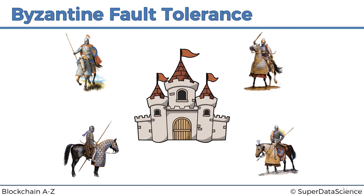They can only win if the majority of them come to a consensus on what to do — whether to attack or retreat. The majority of these generals have to come to an agreement. If three out of four say 'attack' and they attack, they'll win. If three out of four say 'retreat' and they retreat, they'll be safe. However, if they don't reach consensus, they will be destroyed by the enemy.